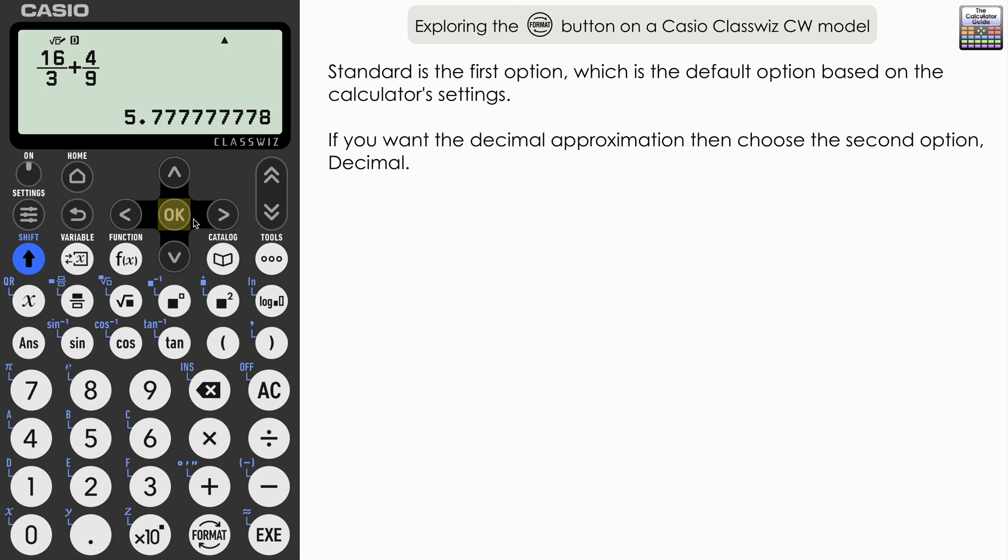Decimal. Press OK. And we have the answer presented as a decimal to, well, 10 significant figures. And you can see that it's actually rounded the final digit there, 8. It's actually 7's recurring. And we'll explore that in just a moment. But it's given it to 10 significant figures.